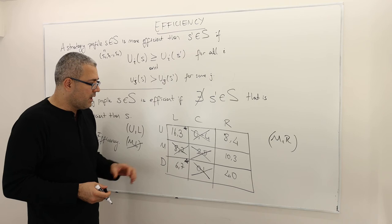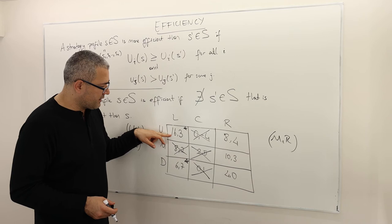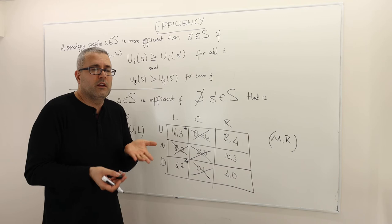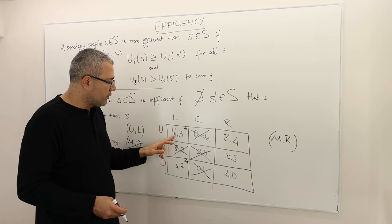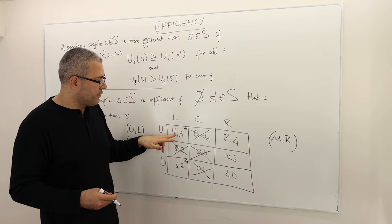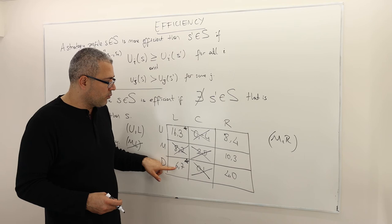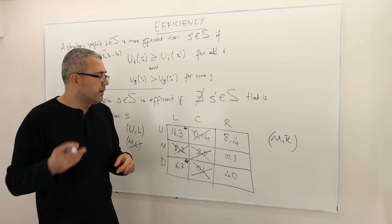Zero-one — same thing, DL gives them both a higher payoff. What about 8-4? The first player can get better than 8 — for example, 16 from UL — but 3 is not good for player two. So UL is not more efficient than 8-4, because player two gets worse off. And no other strategy profile is more efficient than 8-4 either. So there is no more efficient payoff than 8-4, and therefore it is efficient.